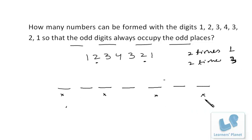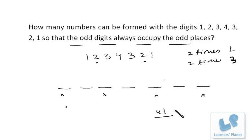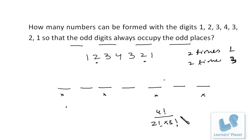These four odd numbers can be arranged at the four odd places in 4 factorial ways. But we need to divide by the repetitions: 1 appears two times so divide by 2 factorial, and 3 also appears two times so divide by another 2 factorial. So the number of ways to arrange odd digits at odd places is 4 factorial divided by 2 factorial times 2 factorial.